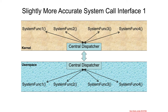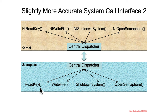A more realistic version of the system call interface is not things going one-to-one direct. There's usually some sort of centralized dispatching mechanism — a centralized dispatching library down in user space that all the various system calls call into. From that central code it goes up to a central location in kernel space, and from there it dispatches to the particular function of interest. To make it more accurate, instead of generic system calls, from Windows there are things like ReadKey mapping to NtReadKey, WriteFile to NtWriteFile, ShutdownSystem, and OpenSemaphore — functionality the kernel provides to user space that most programs will need.